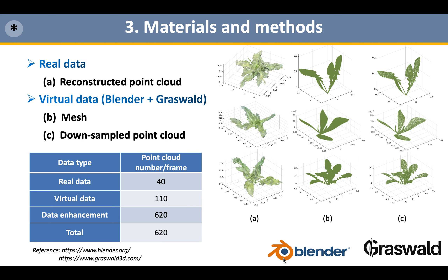Considering that deep learning requires high data quality and diversity in data size, the acquisition of real 3D point cloud data — including processes such as material collection, vision capture, and data processing and 3D reconstruction — was a time-consuming and labor-intensive task. We hope to reasonably introduce virtual plant point clouds as augmented data. We used the open-source software Blender and third-party plugin GreenWorld to create virtual 3D models of simulated plants. By adjusting the random seeds, growth period, size, and other parameters of the plant models in the plugin, we simulated different plant shapes.